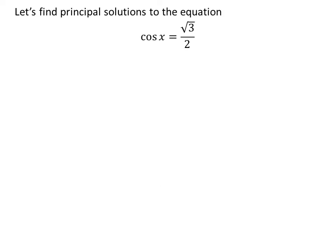Let us first find the principal solutions to the equation cosine of x is equal to square root of 3 upon 2. We know the solutions to the trigonometric equation for which x is greater than or equal to 0 and less than 2 times pi are the principal solutions.